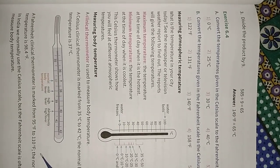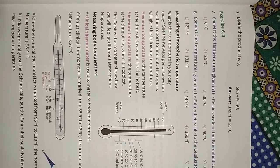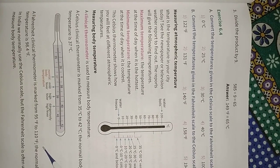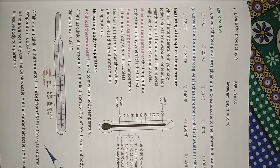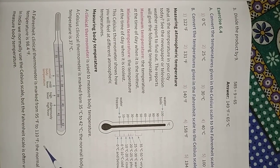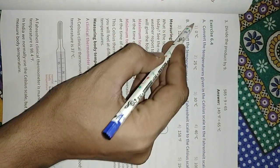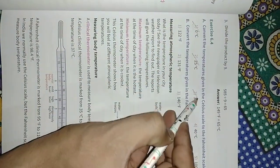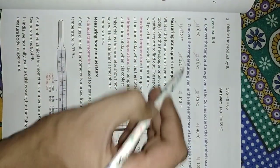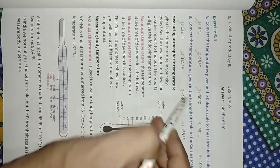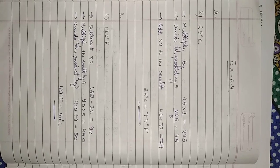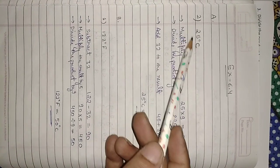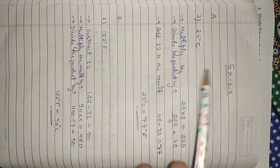In exercise 6.4, we will convert Celsius scale to Fahrenheit scale and Fahrenheit scale to Celsius scale. We will do only the first three questions of part B. Now, convert 25 degrees Celsius to Fahrenheit.